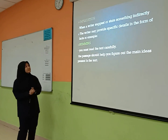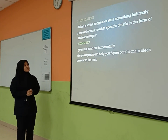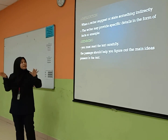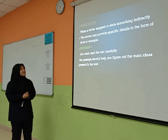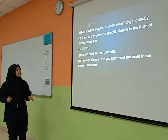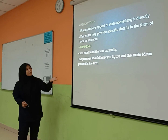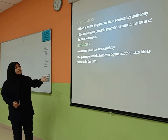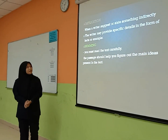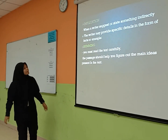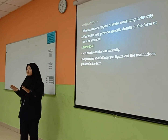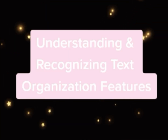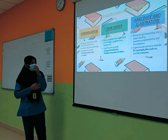Next, implication. Implication is when something is suggested in the text writing. When a writer suggests or states something indirectly, the writer may provide specific details in the form of facts or examples. Next, skimming — skimming is the way you read the text quickly.